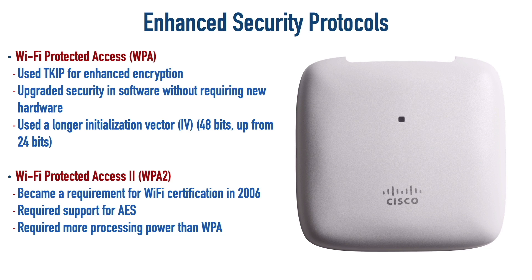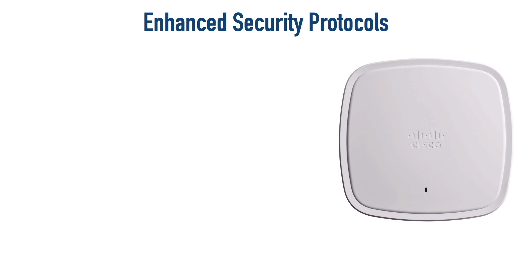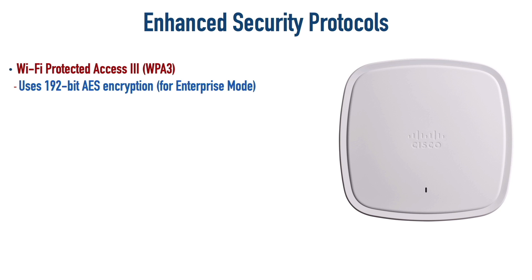For a decade, WPA2 was the go-to wireless security protocol, very resistant against attacks, until 2016 when a vulnerability called the KRACK vulnerability was discovered. So what replaced WPA2? WPA3. It still uses AES — specifically 128-bit AES for personal mode, meaning pre-shared key mode. If you're using it in enterprise mode, you can have an enhanced version: 192-bit AES.